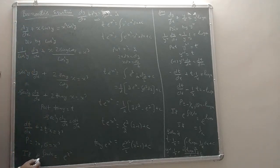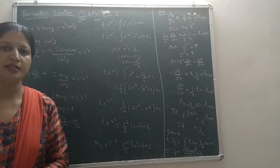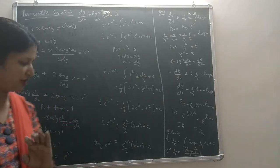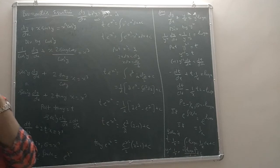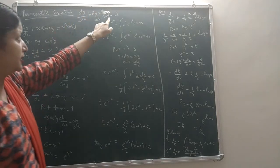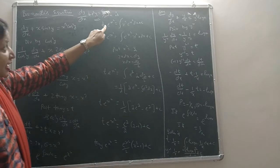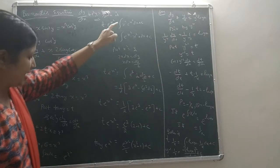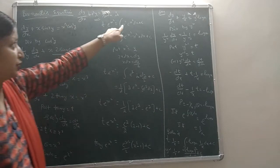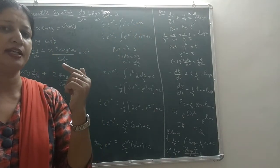Next, we find the integrating factor, which equals e raised to the power of the integral of p dx — here that is integral of 2x dx — giving e^(x²). The solution is then t·e^(x²) equals the integral of x³·e^(x²) dx plus C.